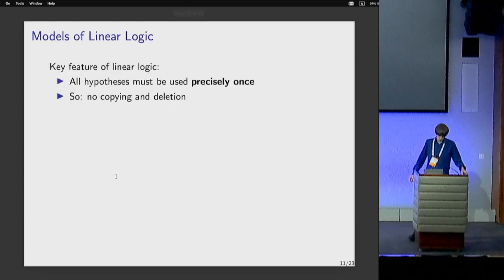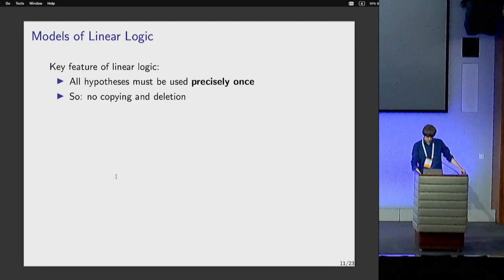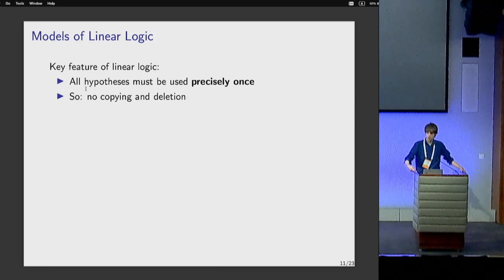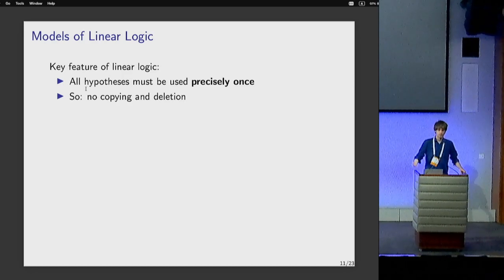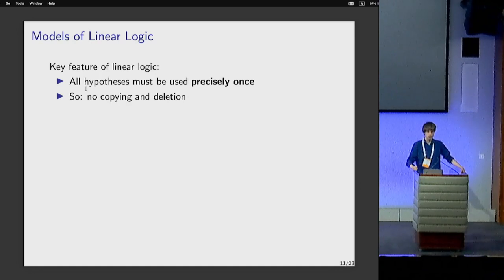Let's start with models of linear logic. The key feature of linear logic compared to ordinary logic is that in normal logic, you're allowed to use your assumptions as many times as you want — multiple times or you can ignore them. But linear logic is based around the idea that if you eat your cake, you can't have it anymore. You can use your assumptions precisely once — you can't copy them and use them again, and you're also not allowed to delete your assumptions.